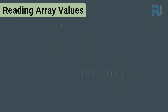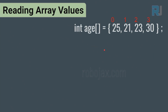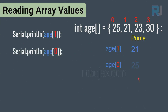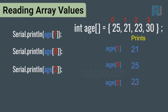Now, how can we read each element of an array? If we have this array called age, we can write Serial.print(age[1]), which will print 21 — index 1 refers to the second element. If we use index 0 it prints 25, index 2 prints 23, and index 3 prints 30.